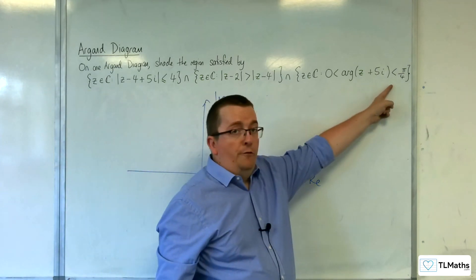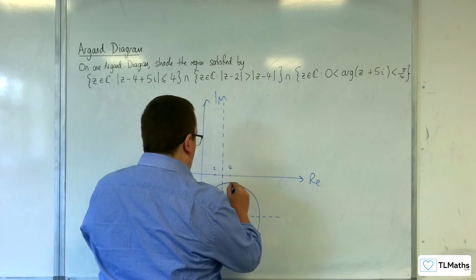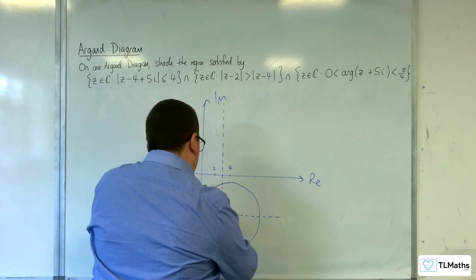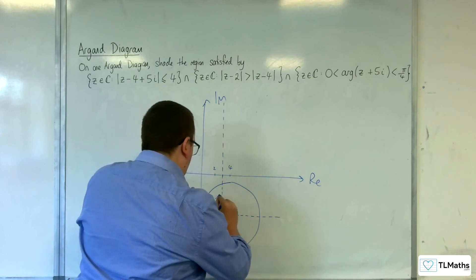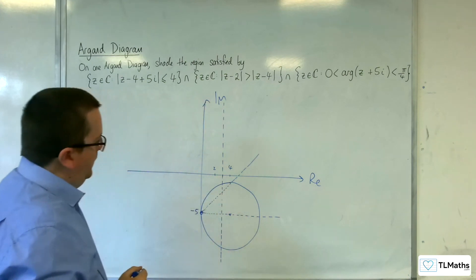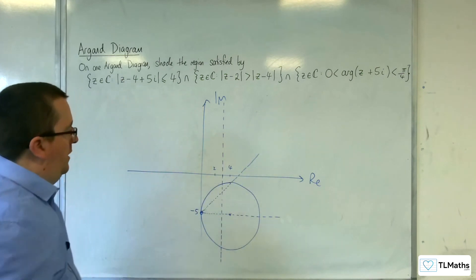And pi over 4, now that's going to be going through the top point of the circle. So, dotted line, dotted line, so something like that, going through that top point. And we want between that region, between those two lines.